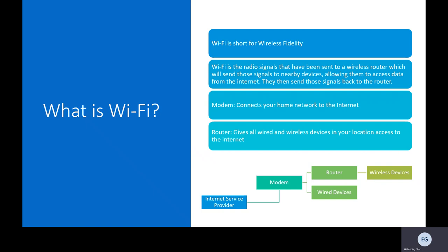We just threw a lot of words at you, so if you look down below at our handy-dandy hierarchy, we can explain this a little better. Your internet service provider, whether it be Google Fiber, AT&T, Spectrum, et cetera, will turn on internet to your location through an outlet known as a coax cable.